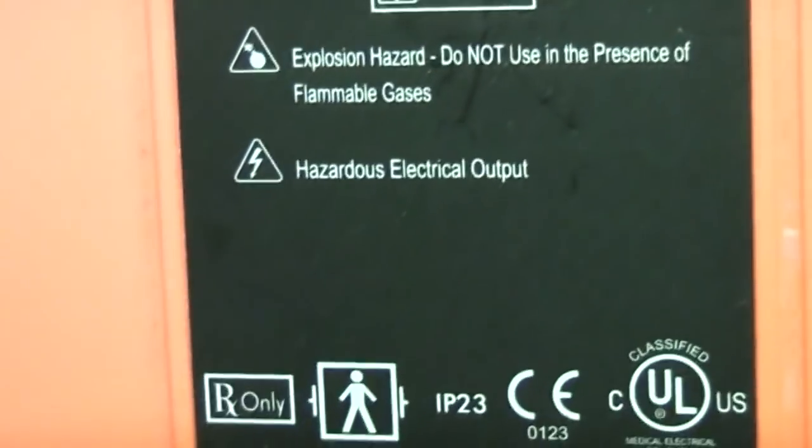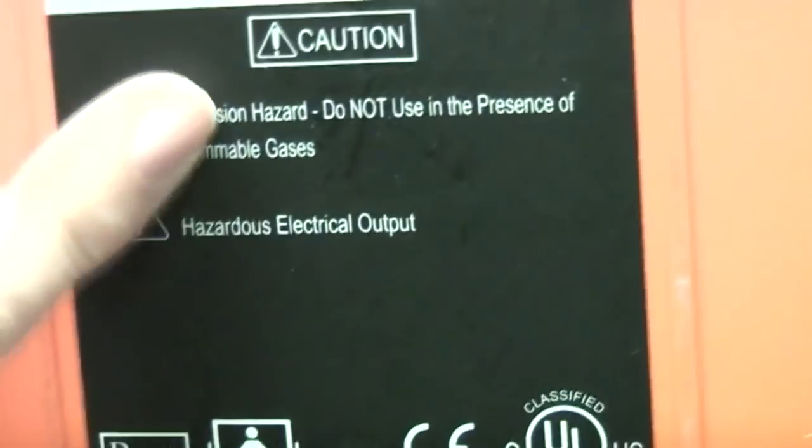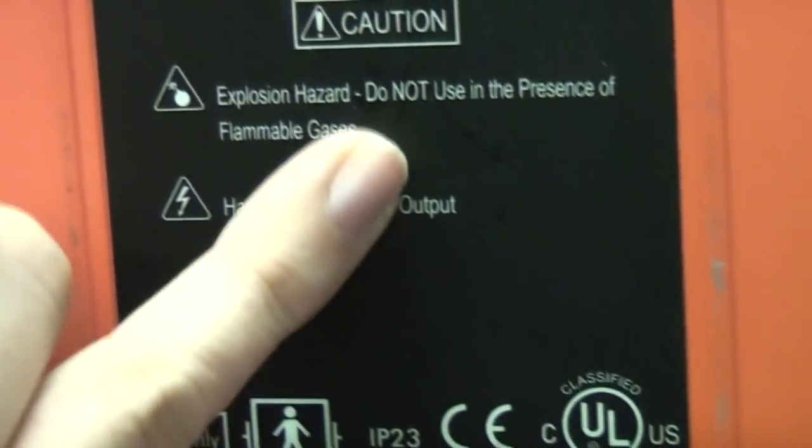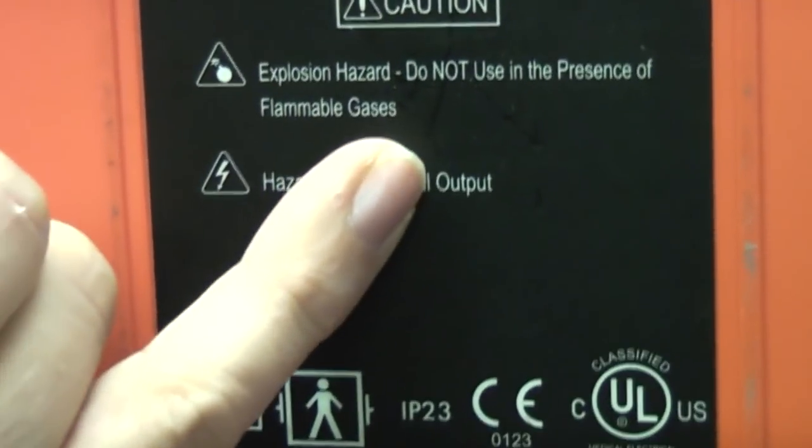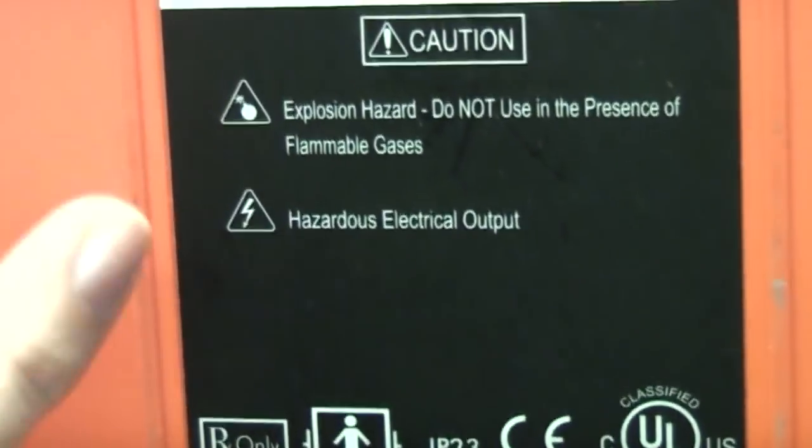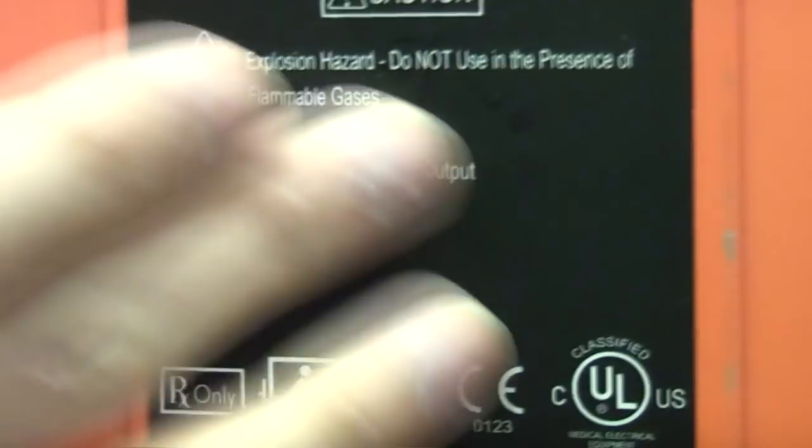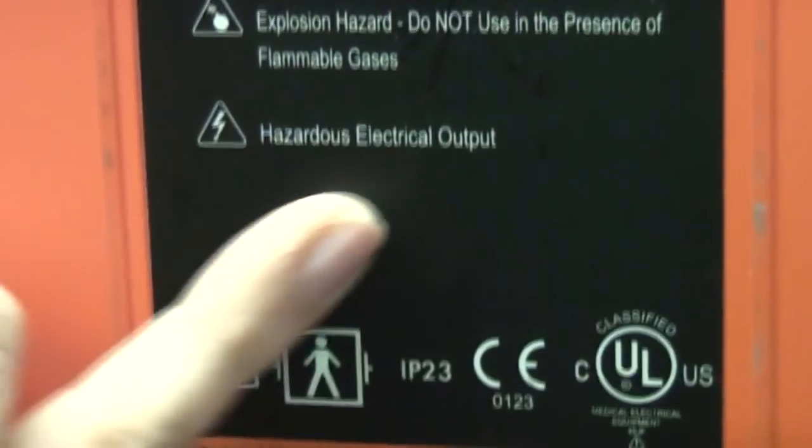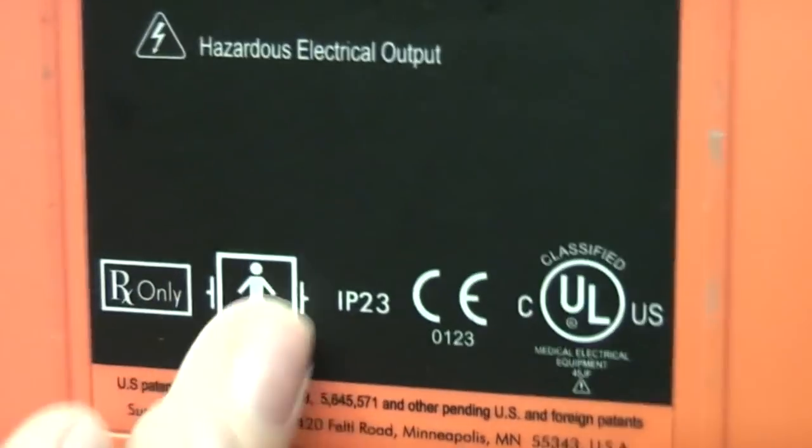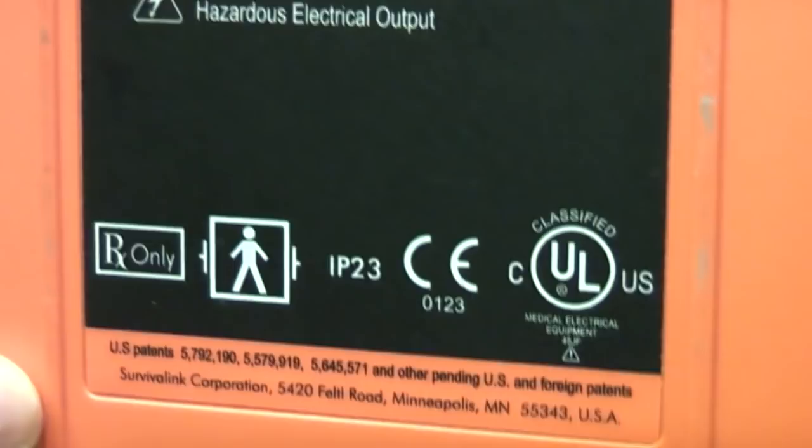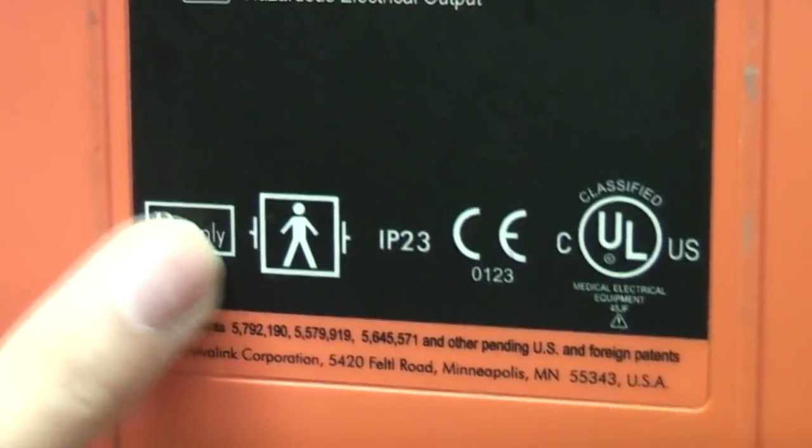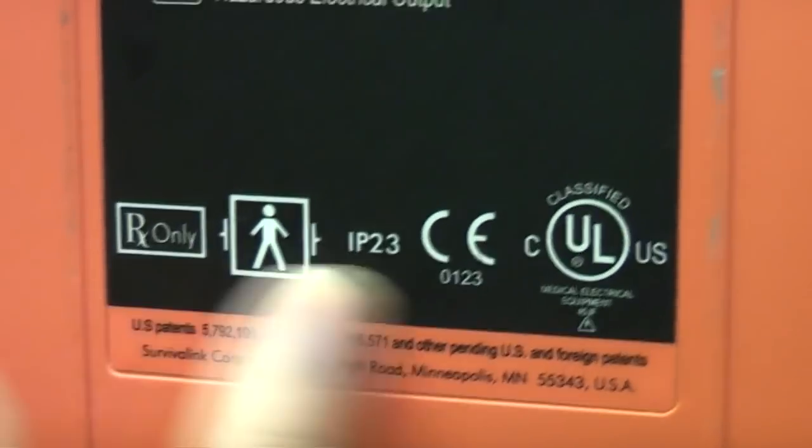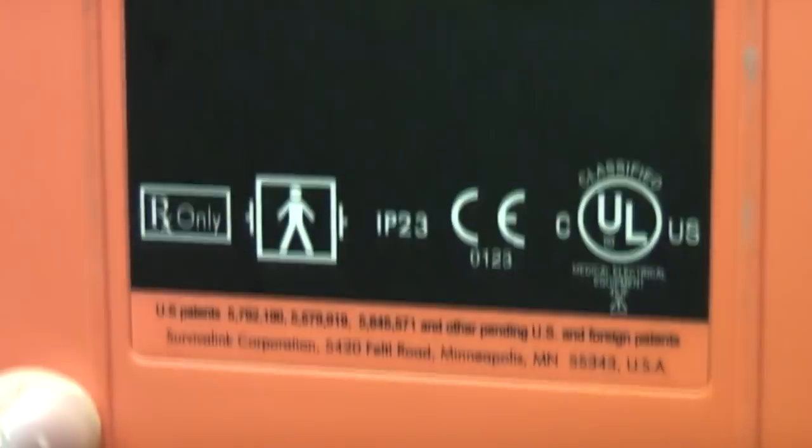All the usual warnings and stuff on the label at the back. Explosion hazard, the reason for that is that some anesthetics are potentially explosive, can produce an explosive atmosphere. So you don't really want to be discharging high voltage things in the presence of those in case of nasty explosion incidents. And obviously hazardous electrical output, well yeah, that's what it's supposed to do. I'm assuming that means only use for external defibrillation.